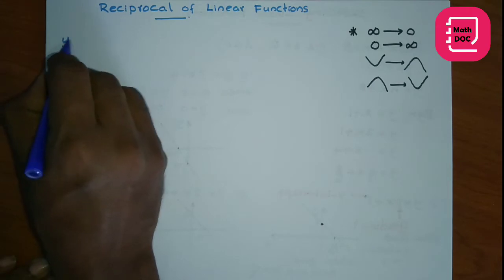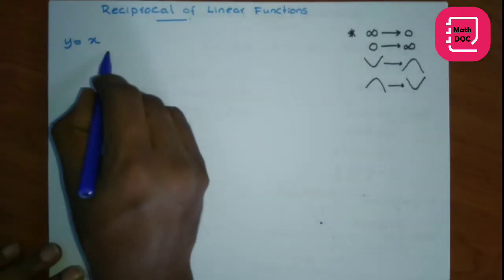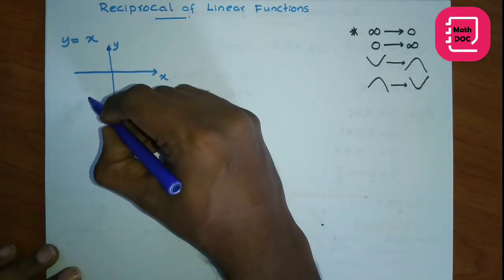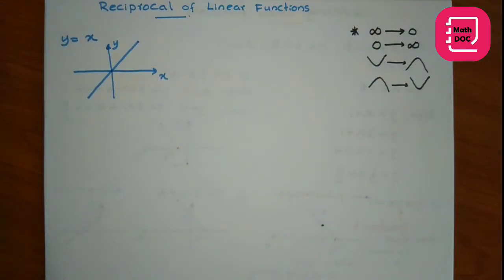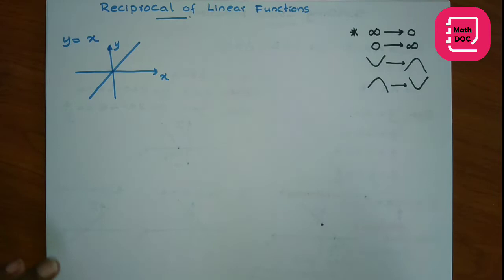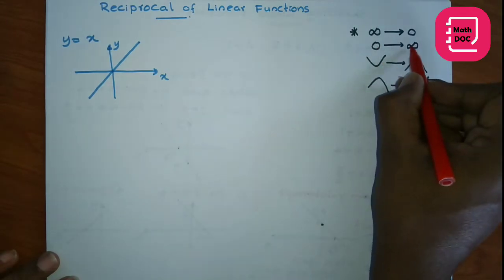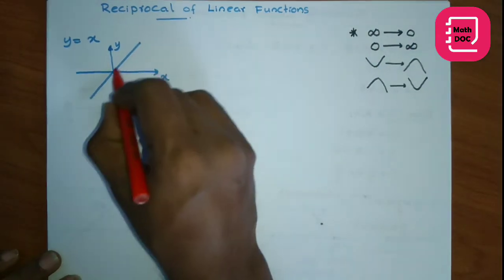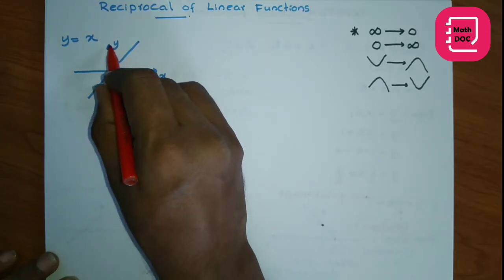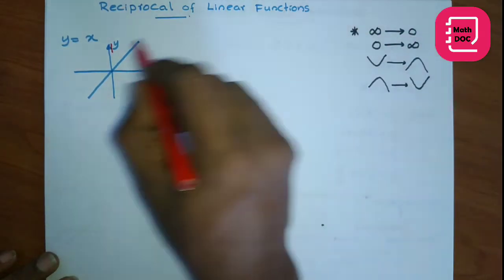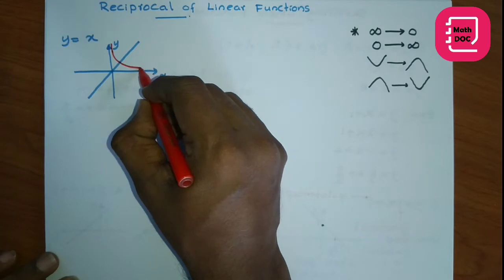Now let's do some examples. Consider the function y equals x. Here we sketch this function on the x-axis and y-axis. We call y equals x the mother function of linear functions. Now when getting reciprocals, the y value 0 goes to infinity. In this portion all are positive, therefore 0 goes to plus infinity, and here infinity goes to 0. Therefore it moves like this.